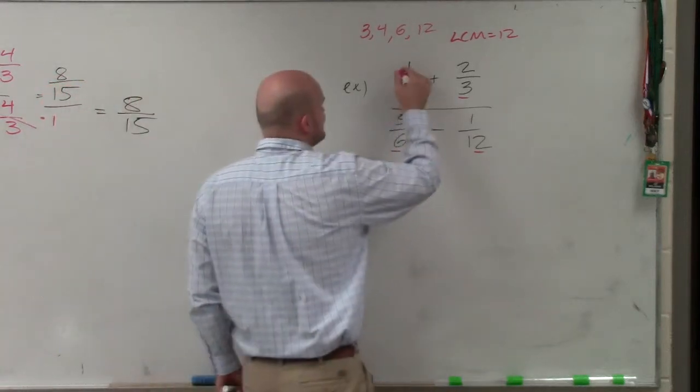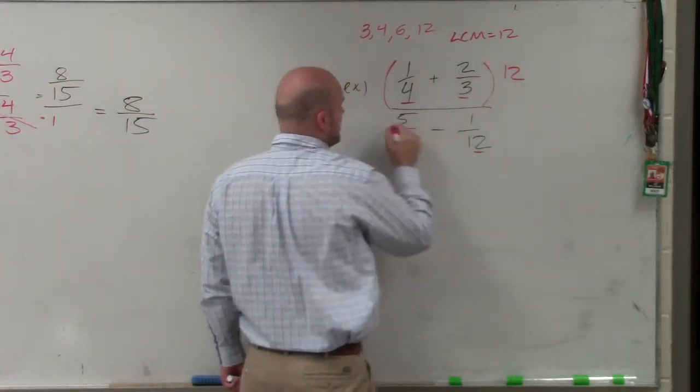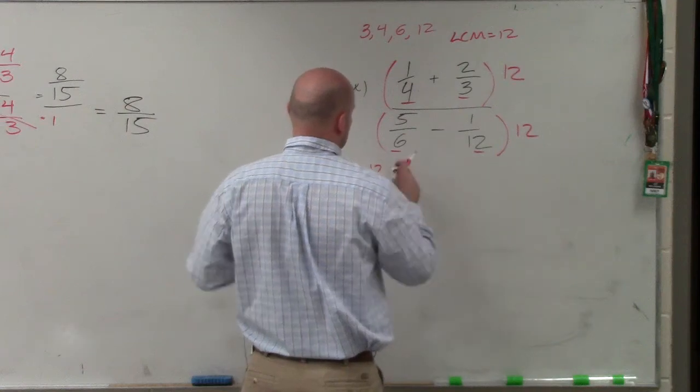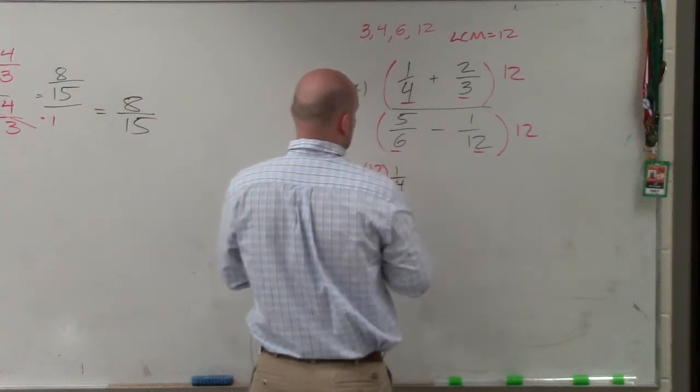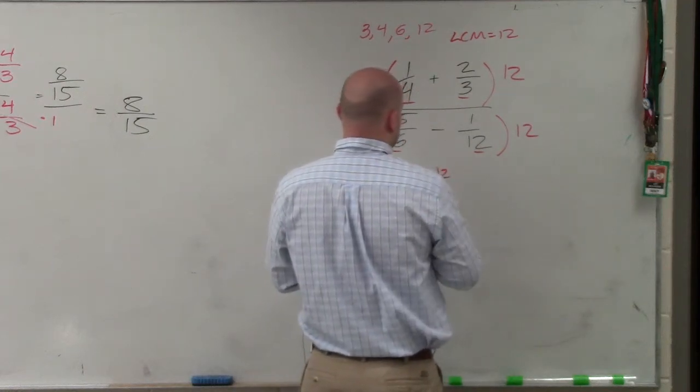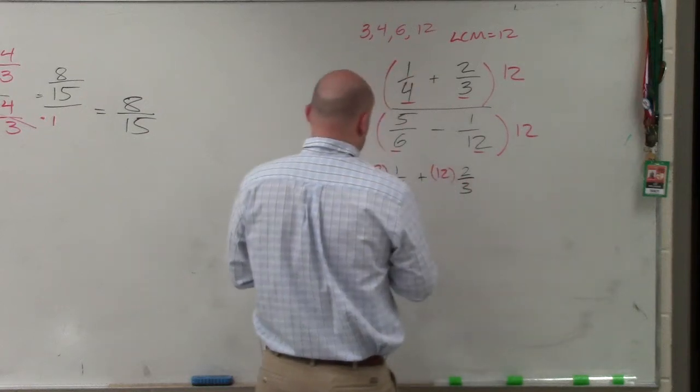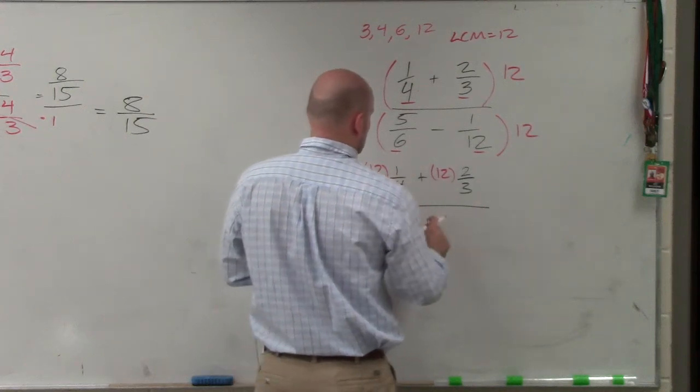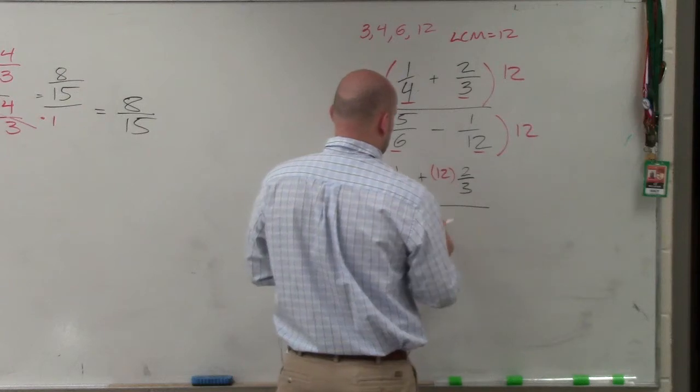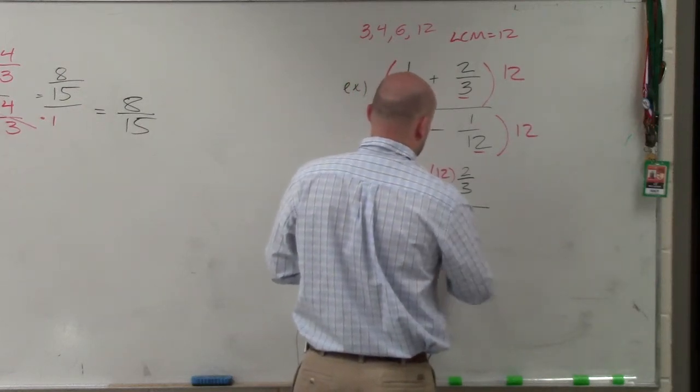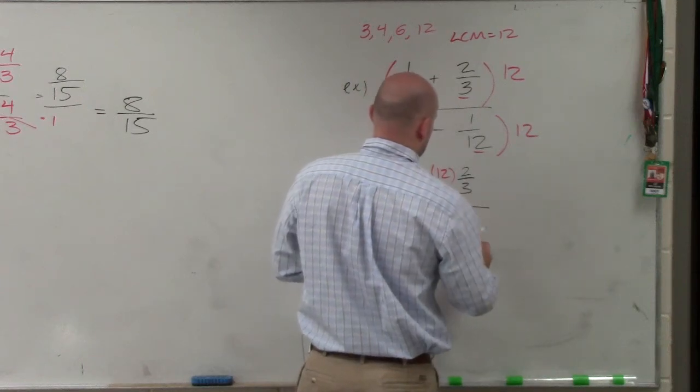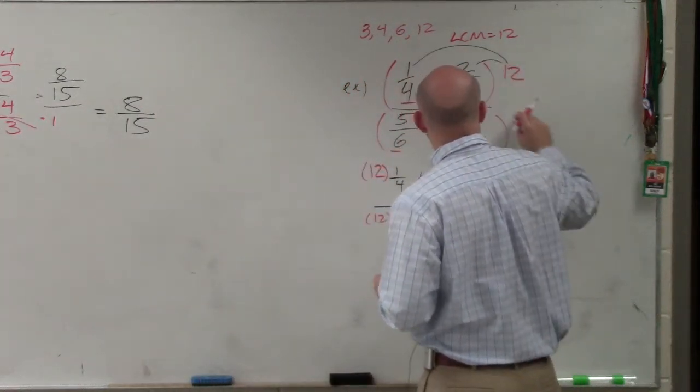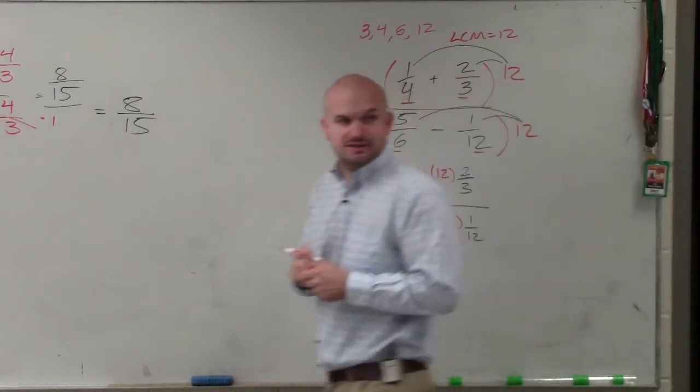So now what you're going to do is multiply the numerator by 12 and the denominator by 12. And when you do that, it's going to look something like this. Because you have to make sure you apply distributive property. Does everybody see what I did? I basically distributed the 12 into every single fraction by applying the distributive property.